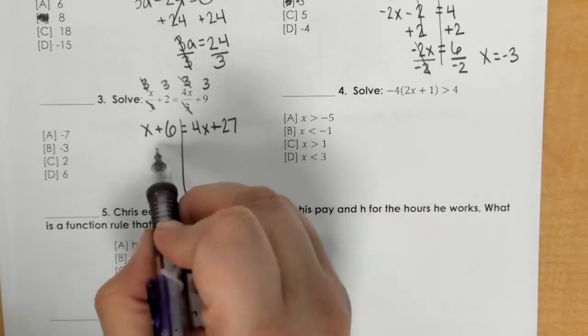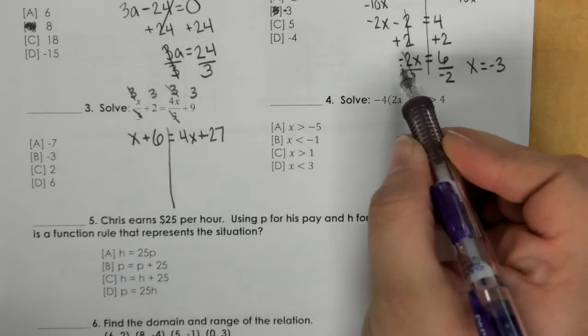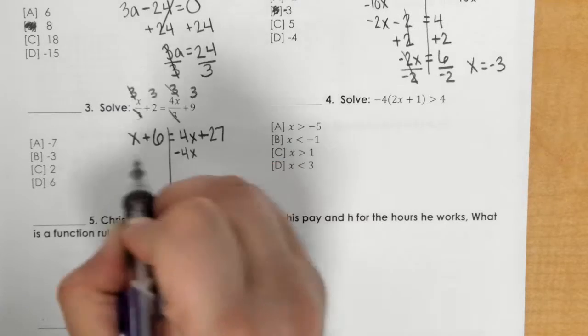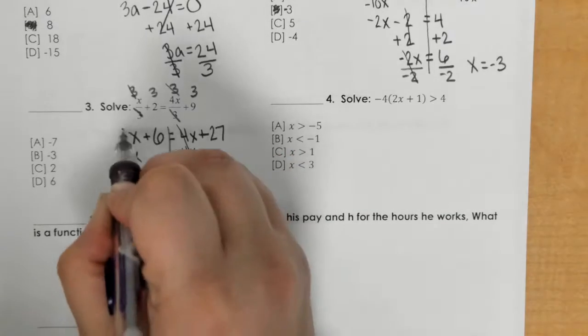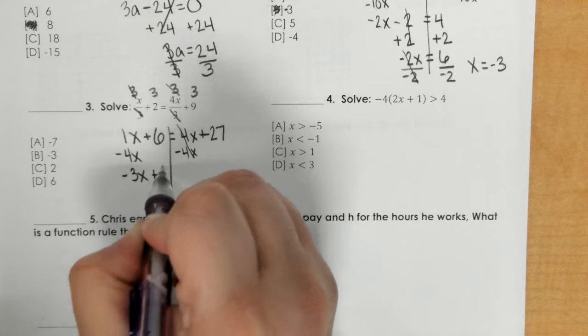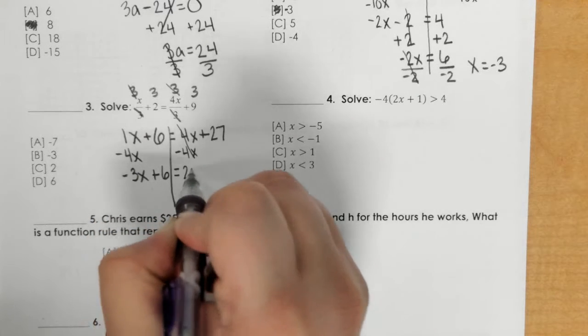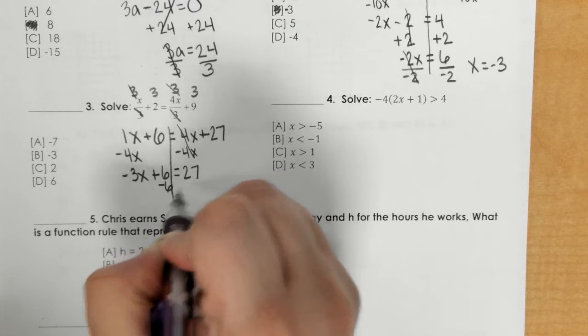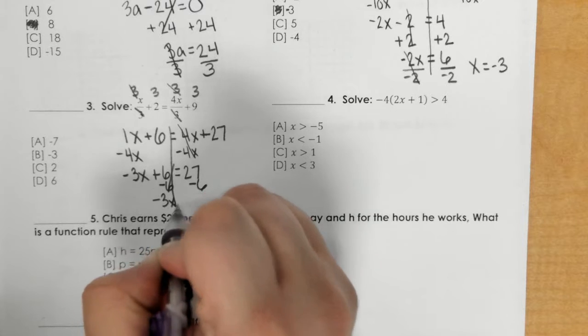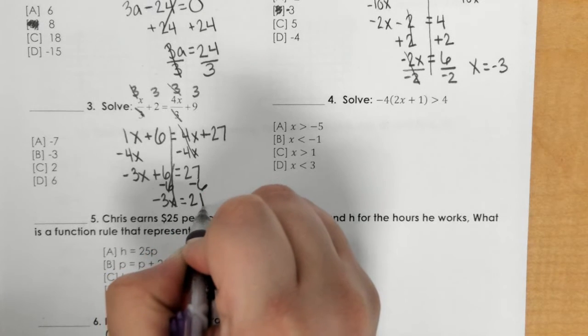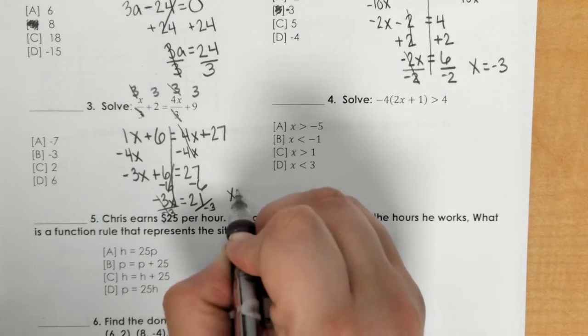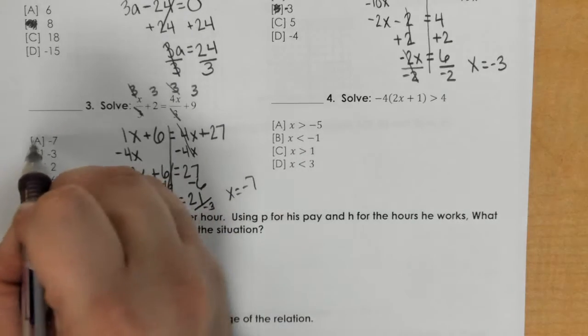Again, this is variables on both sides just like the previous problem. We're going to subtract that 4x to both sides. So 1 minus 4 is negative 3x. You subtract 6 and we get negative 3x equals 21. If I divide both sides by negative 3, I get negative 7 which is A.